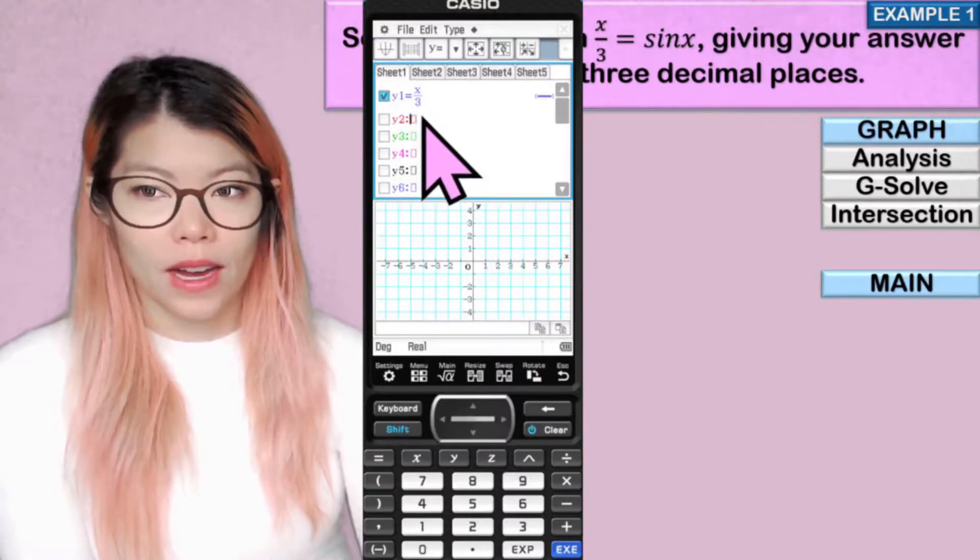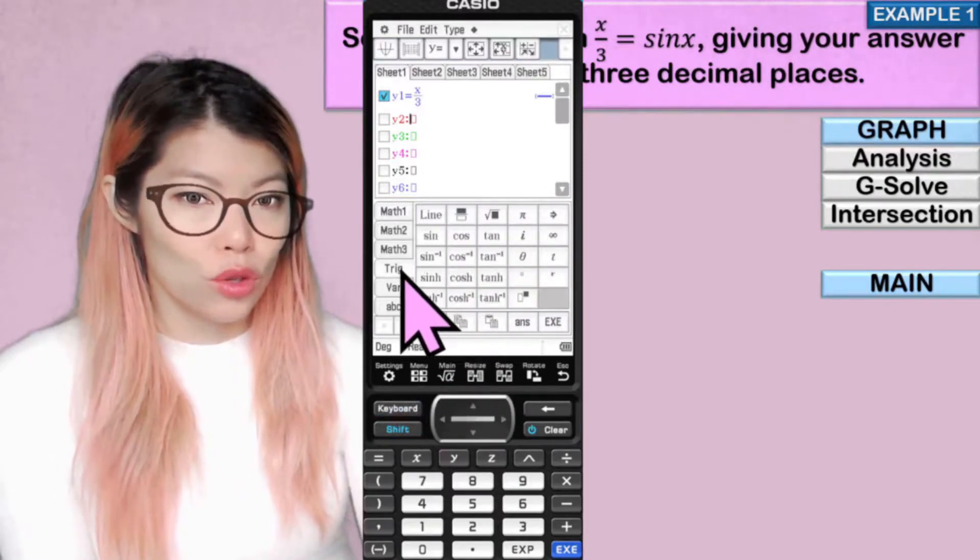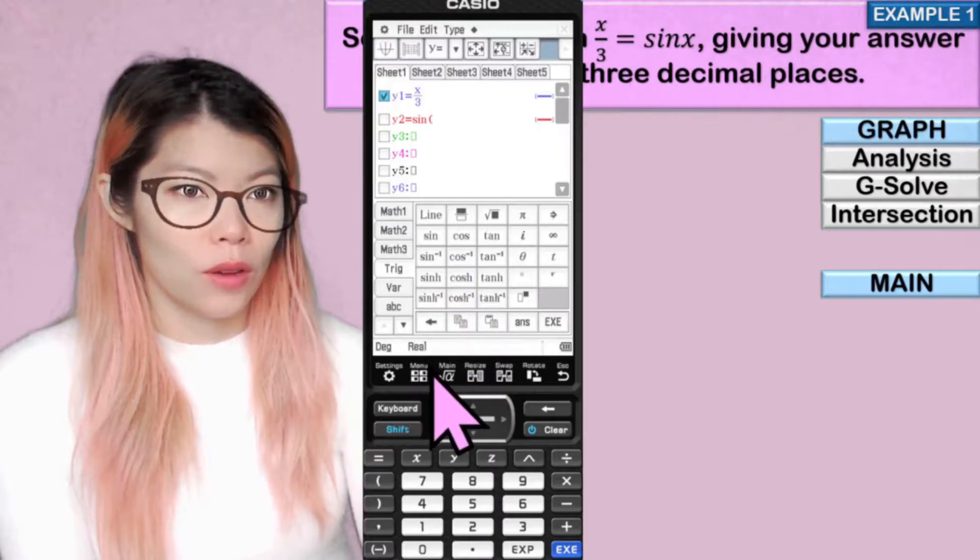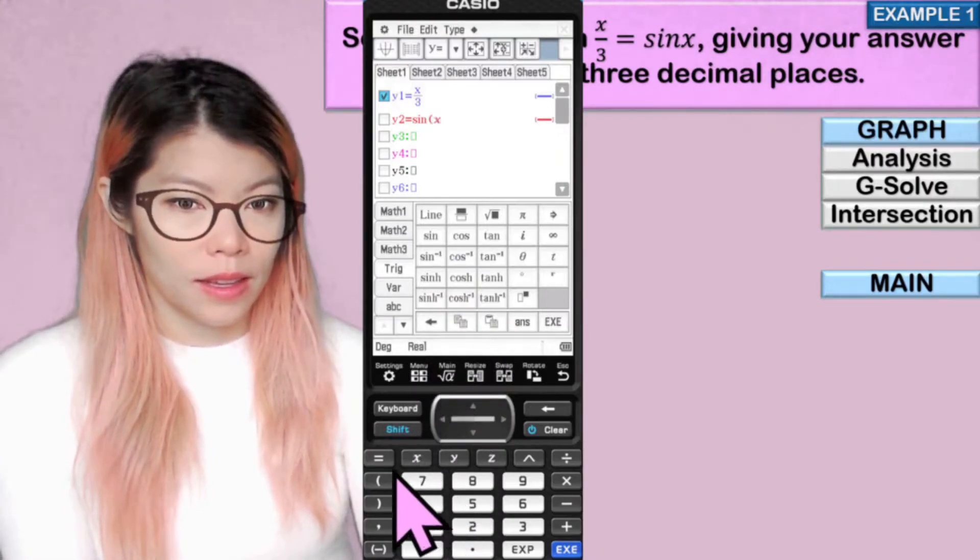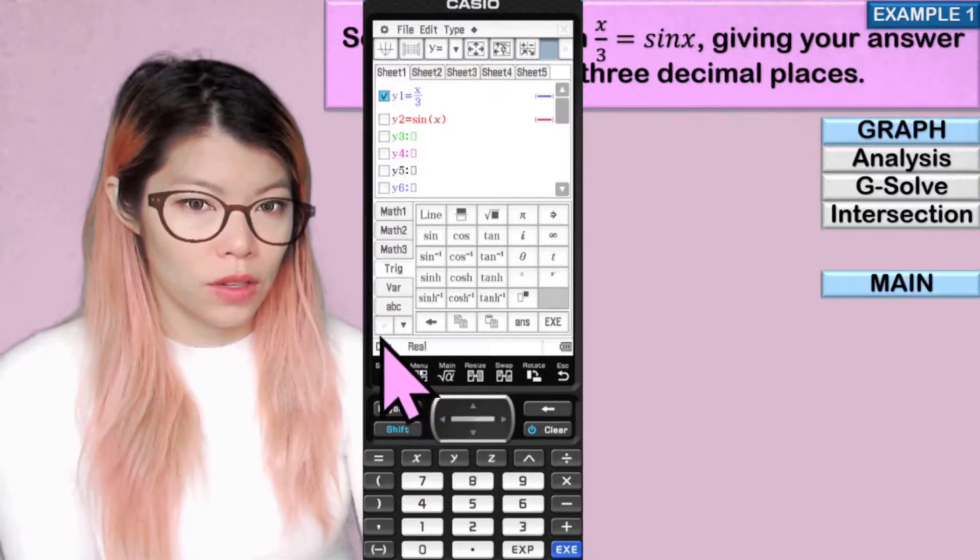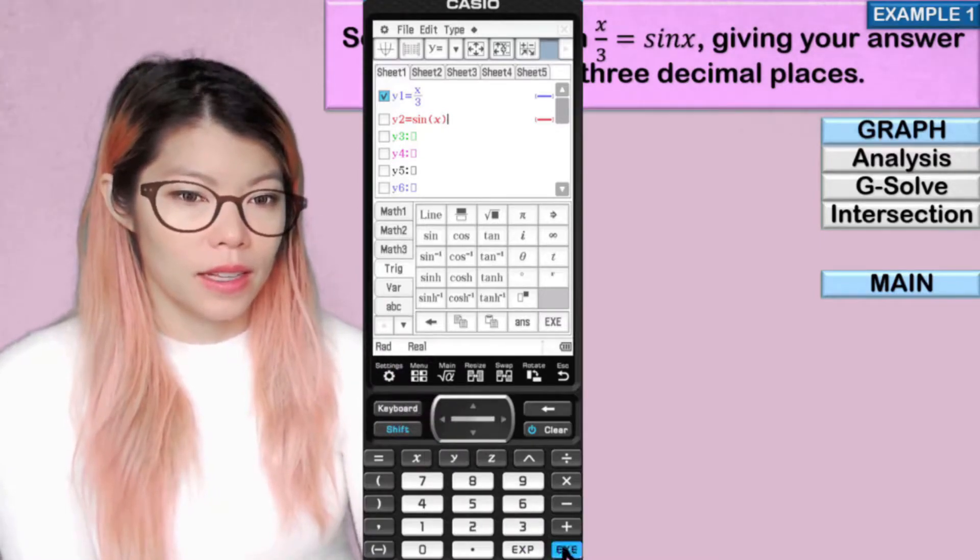And our other equation is sin x, so go to keyboard, then trig, sin, and make sure that we are in real, not imaginary, and we are in gradients. There you go. Click enter.